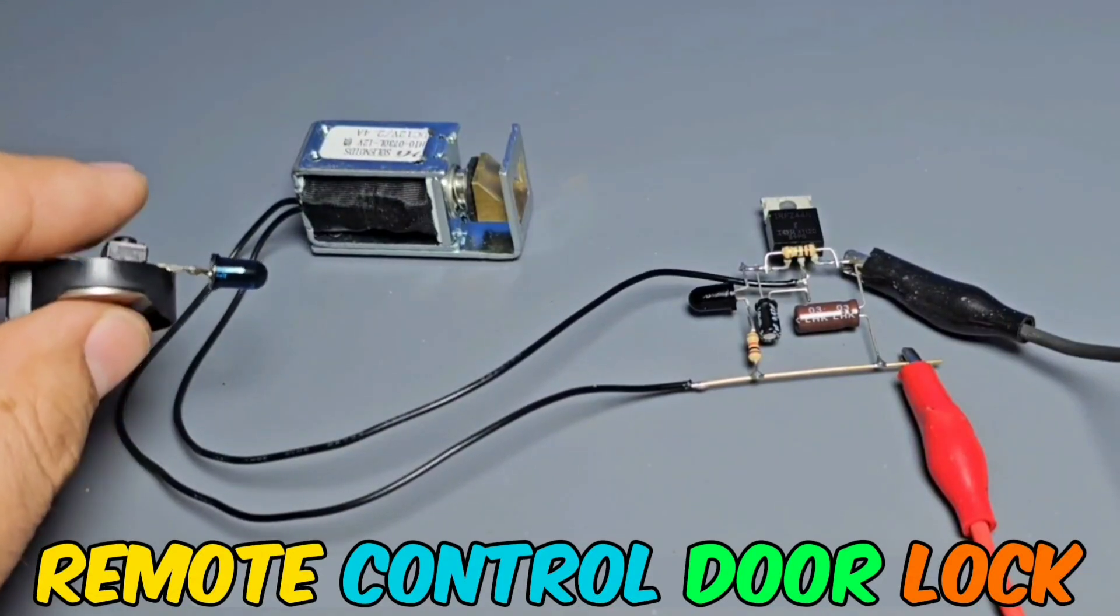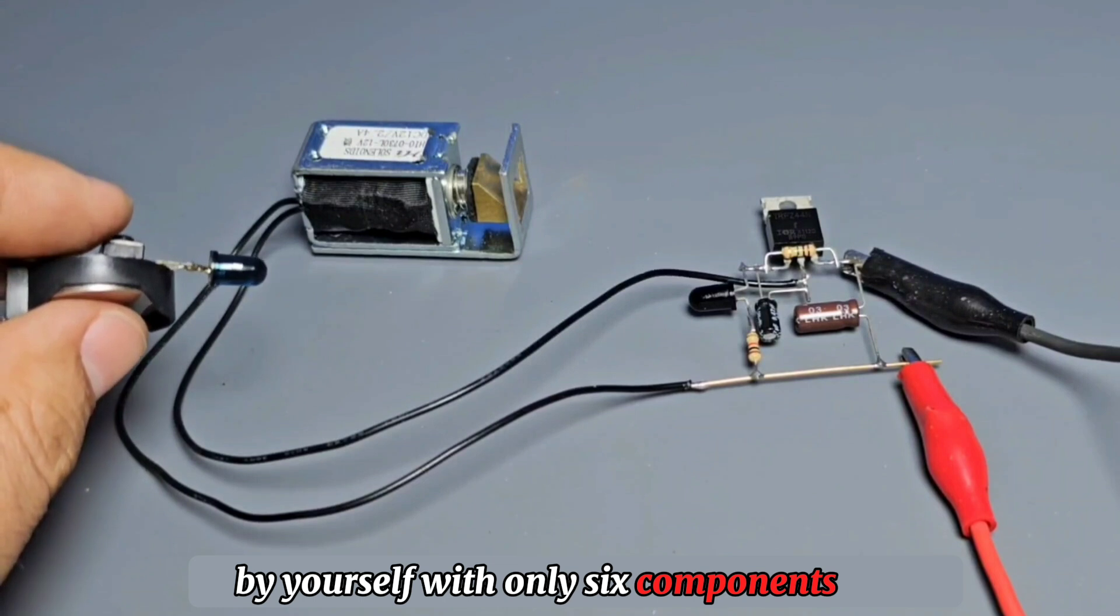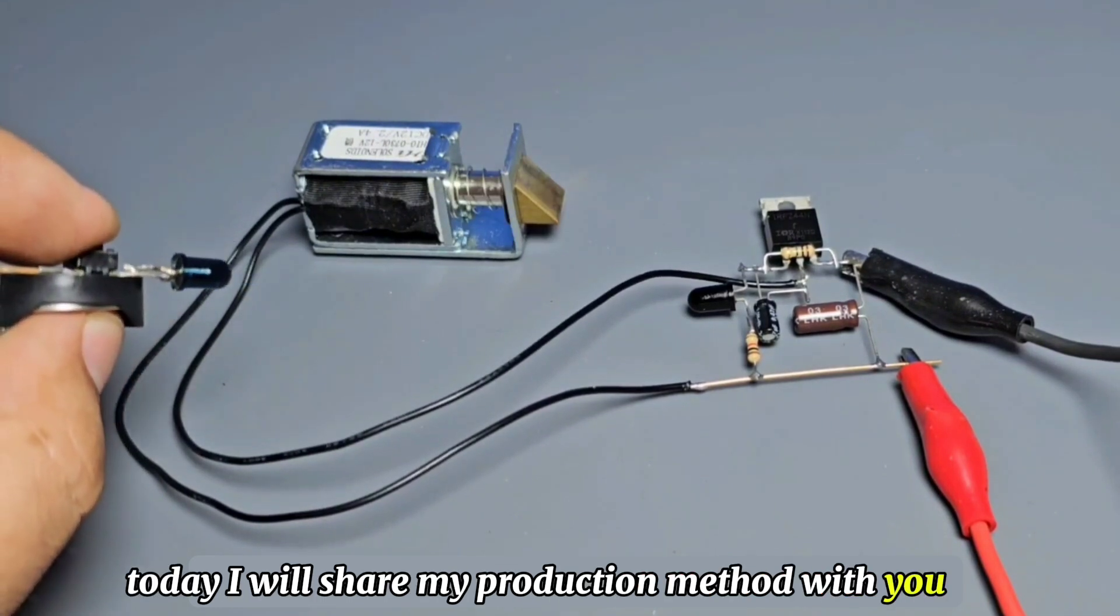You can make a door-lock remote control circuit by yourself with only six components. Today, I will share my production method with you.